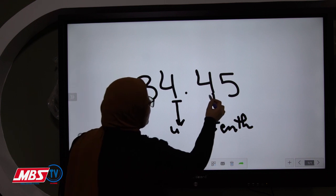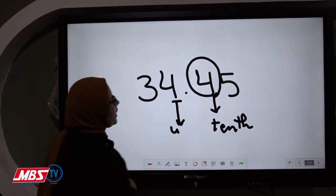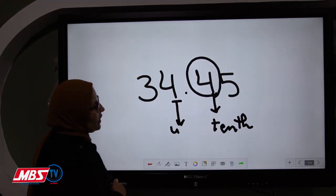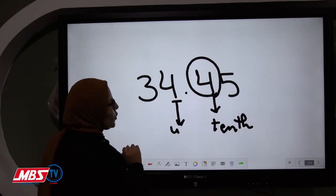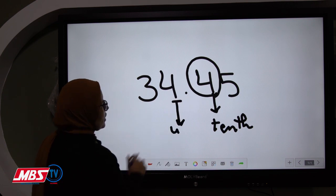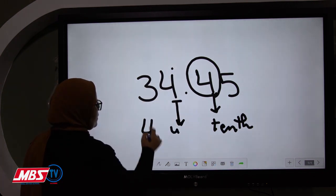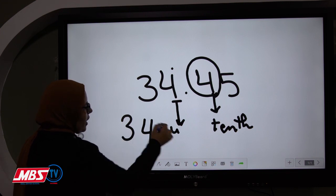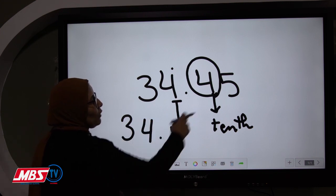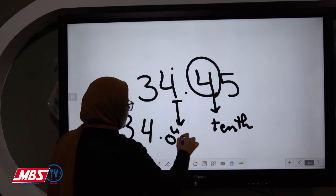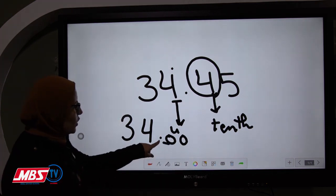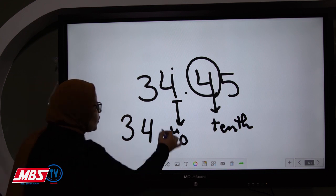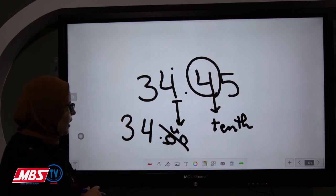We look at the tenth place value. Here in the tenth place value we have 4. Is 4 poor or rich? Four is poor, so we give nothing. We write 4 as it is and write 3 as it is, and we write the decimal point. We replace the remaining decimal digits with zeros. Since we have zeros after the decimal point, we can ignore them — they are meaningless. So the answer is 34.